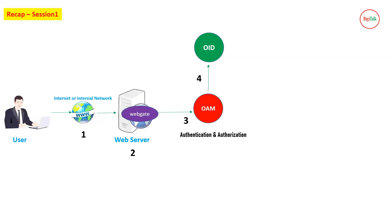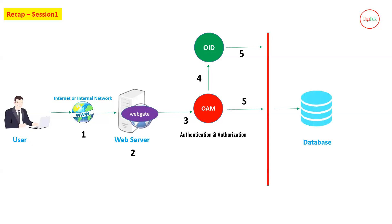From OAM, the request is forwarded to OID for user authentication, because OID is an LDAP — an identity store that stores all your usernames, passwords, and complete profile data. OAM and OID also connect with a backend database: OAM uses it to store its metadata schemas, and OID uses it to store all your identities.